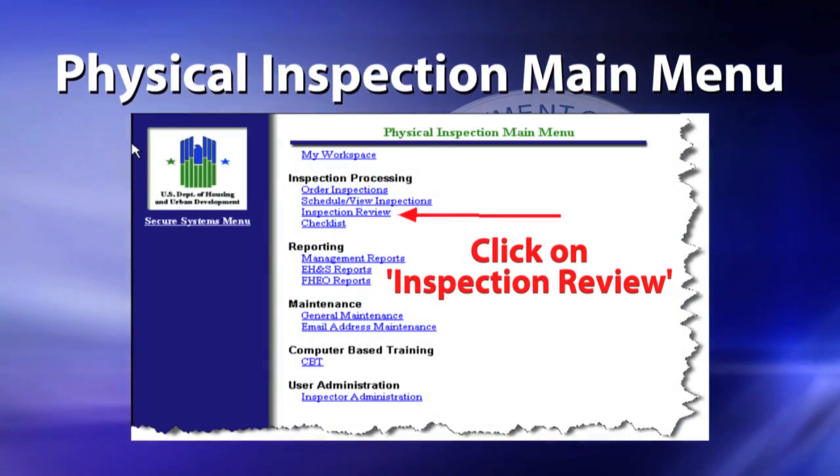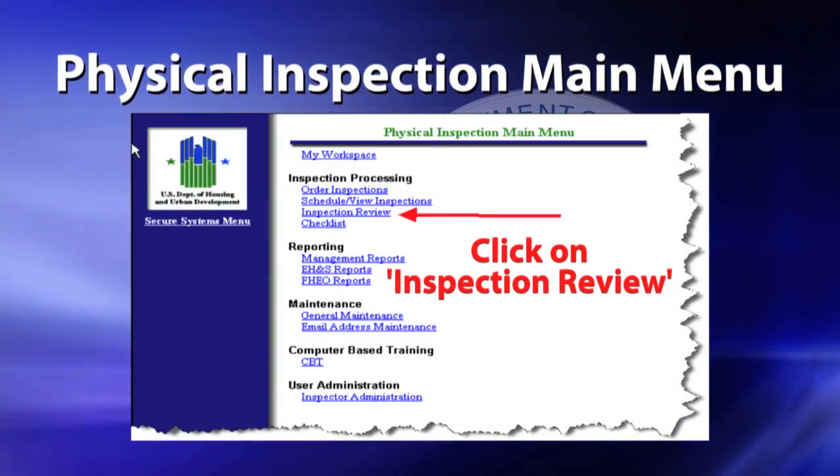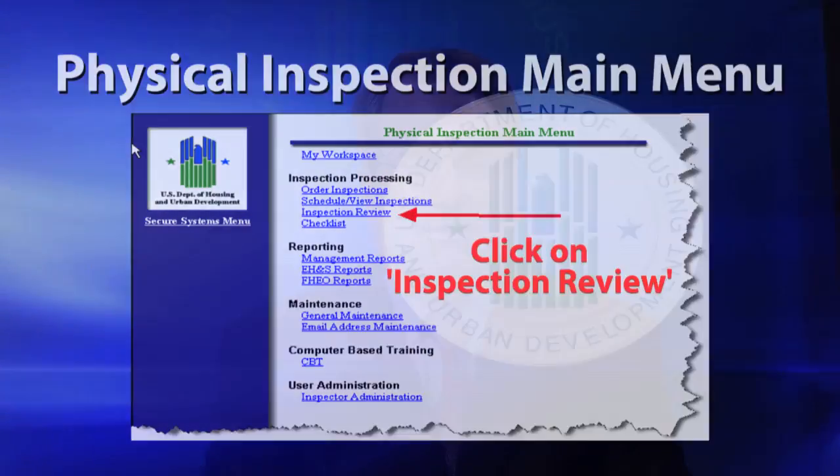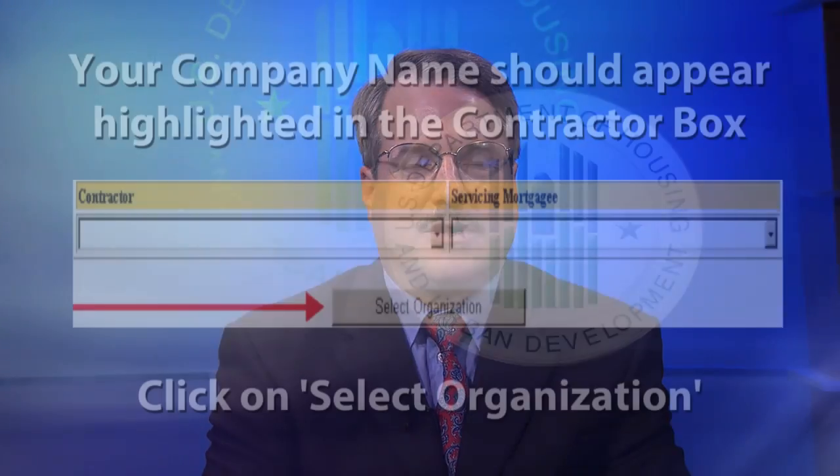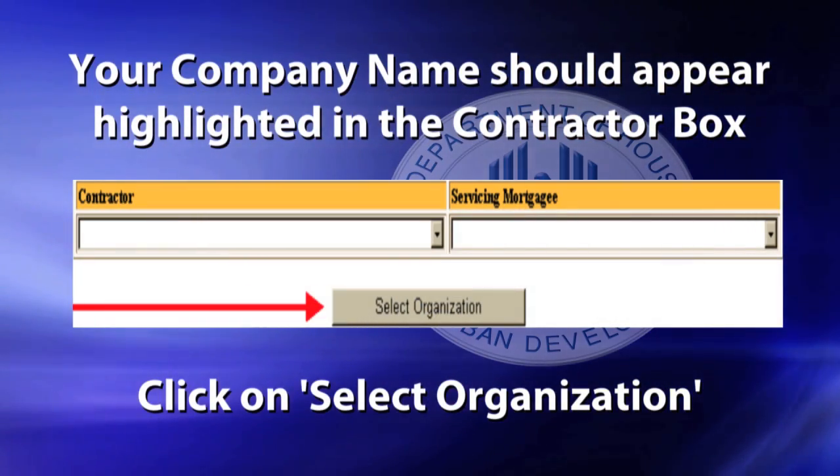Fiscal Inspection Main Menu Web Page: After logging on to the REAC online systems, click on Physical Assessment Subsystems. Under Responding, click on Inspection Review. Your company name should appear highlighted in the contractor box. Click on Select Organization.